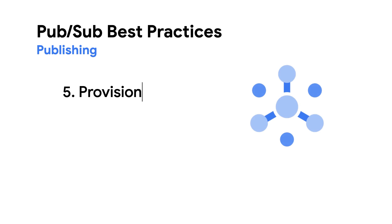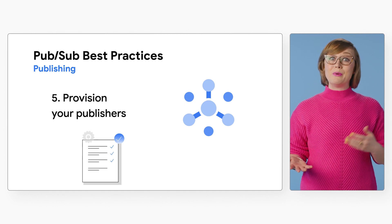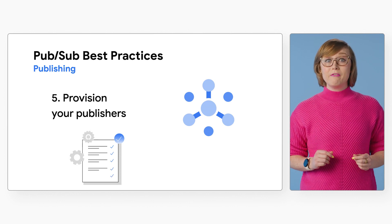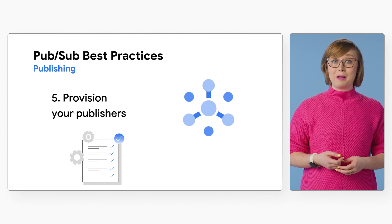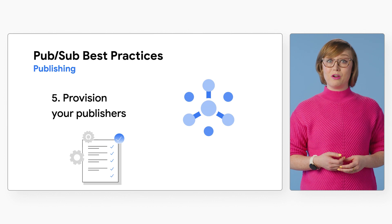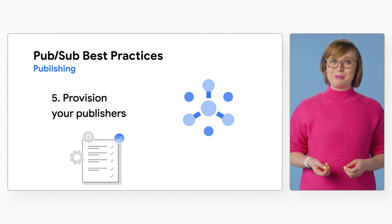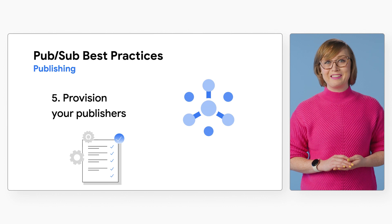Number five: provision your publishers. Your published throughput is also CPU and memory bound. More available machine cores allow you to set a higher thread count for better published throughput. To learn more about how to maximize streaming performance, check out our links in the description for a blog post that dives deeper into this topic.